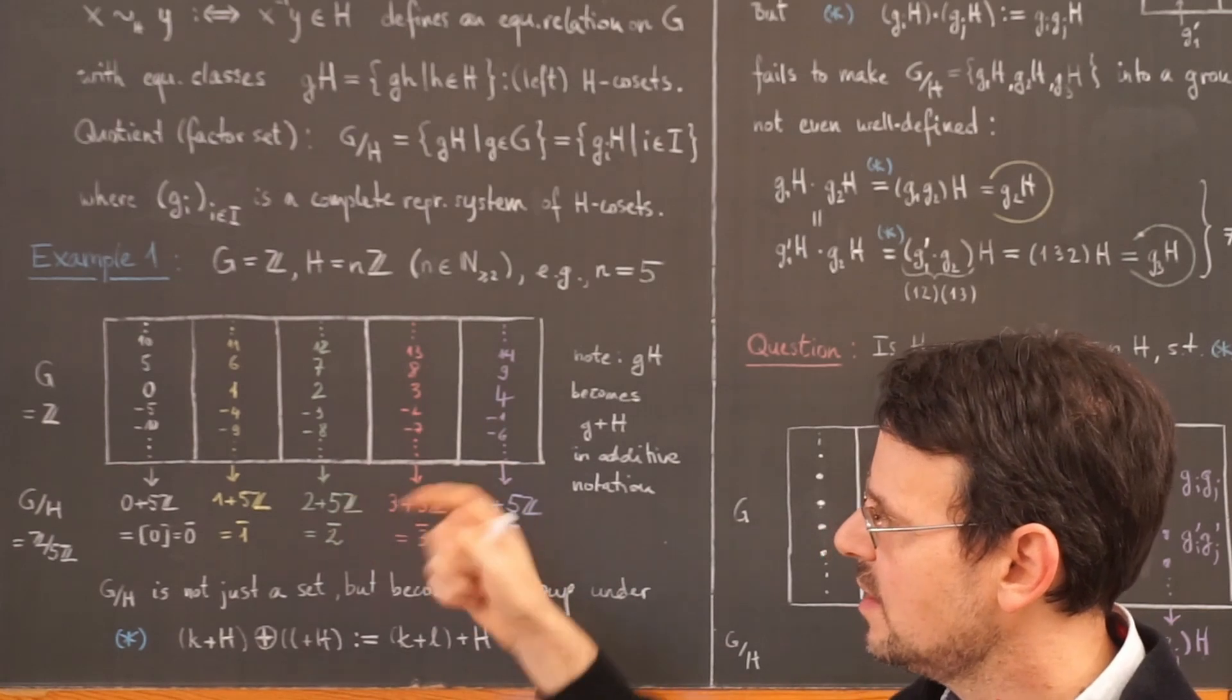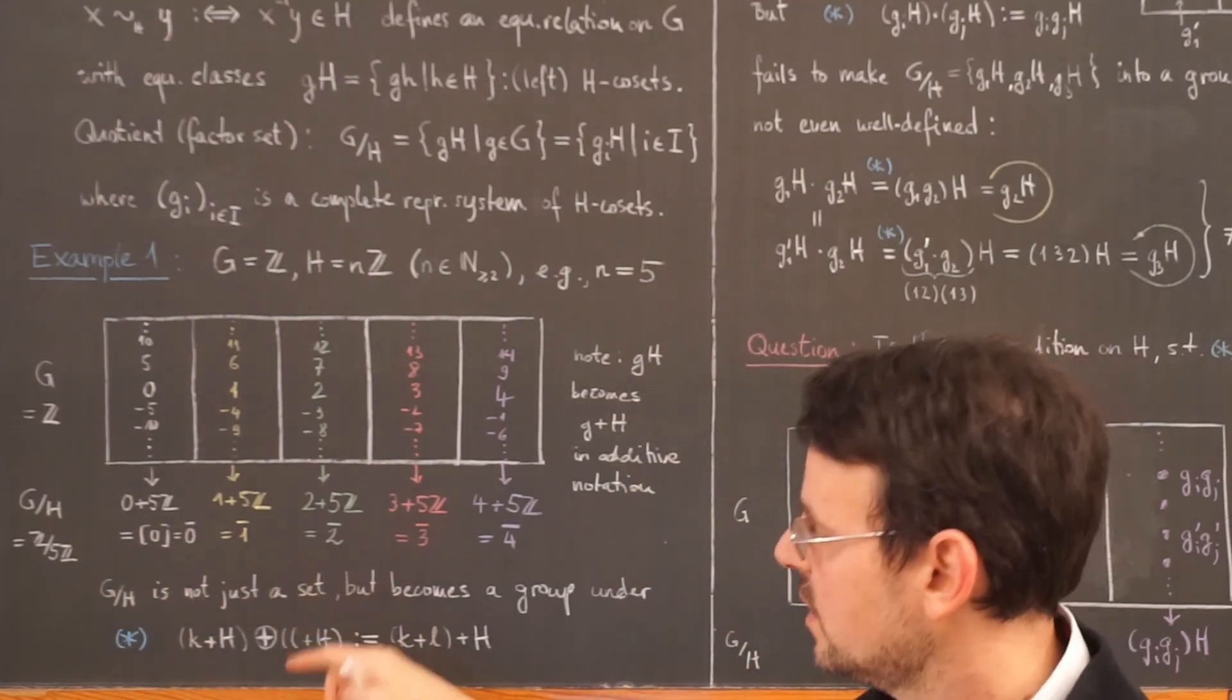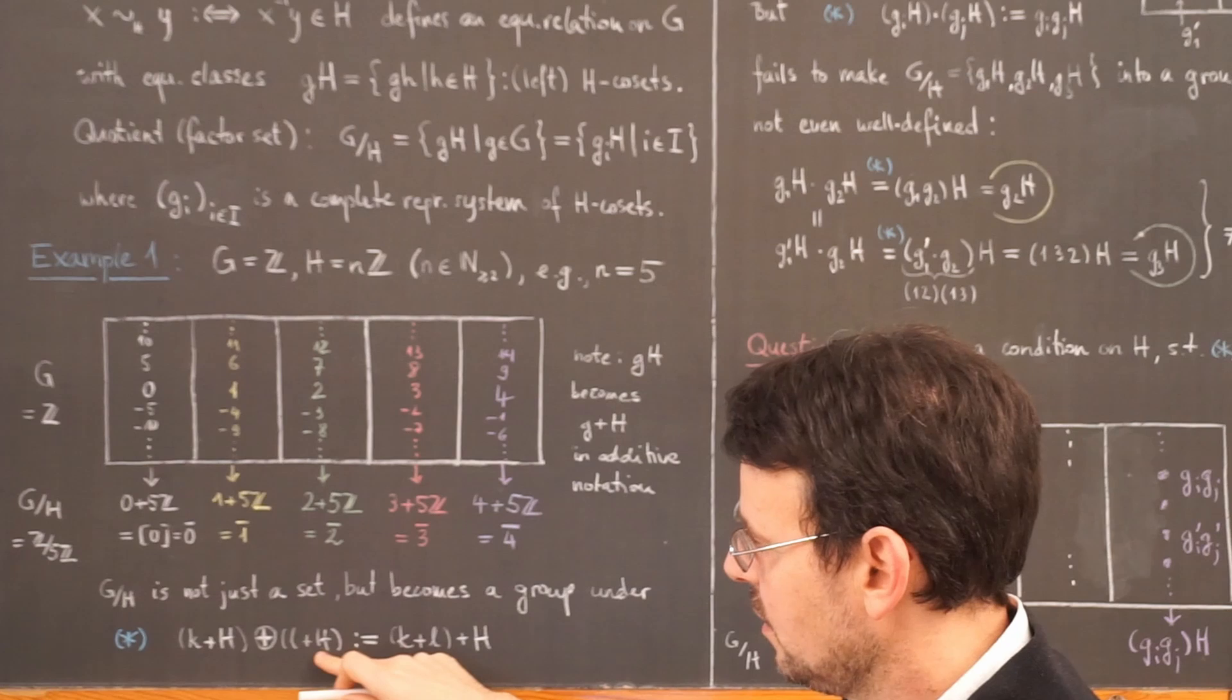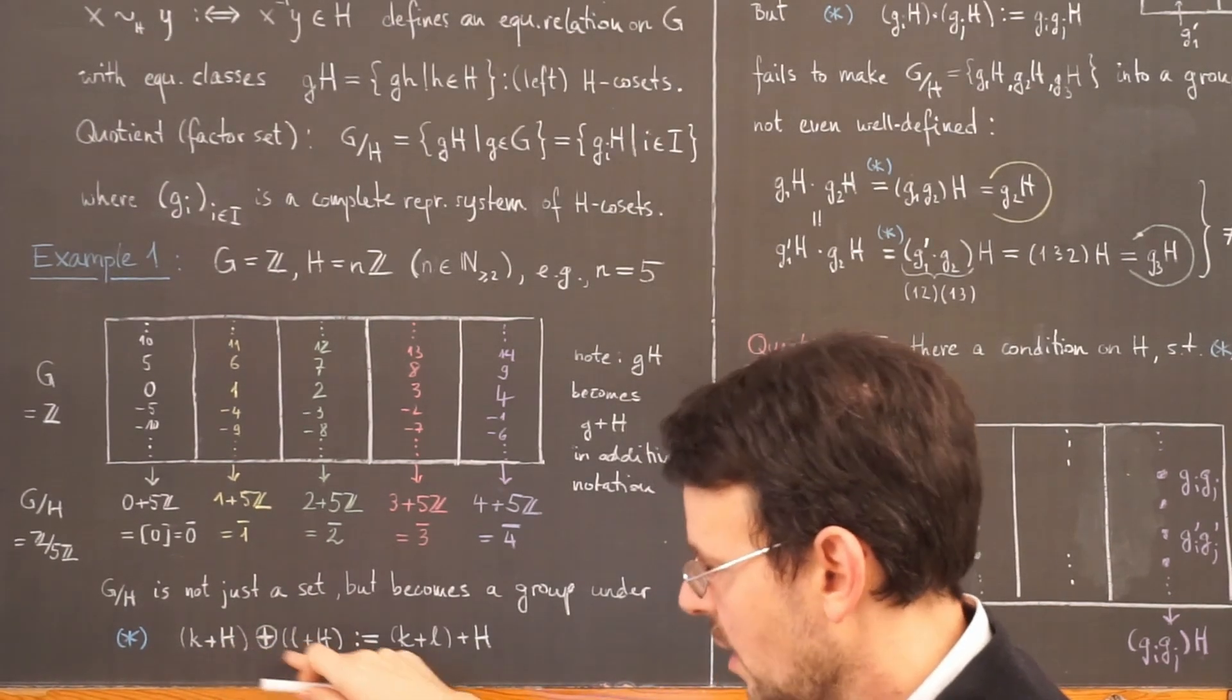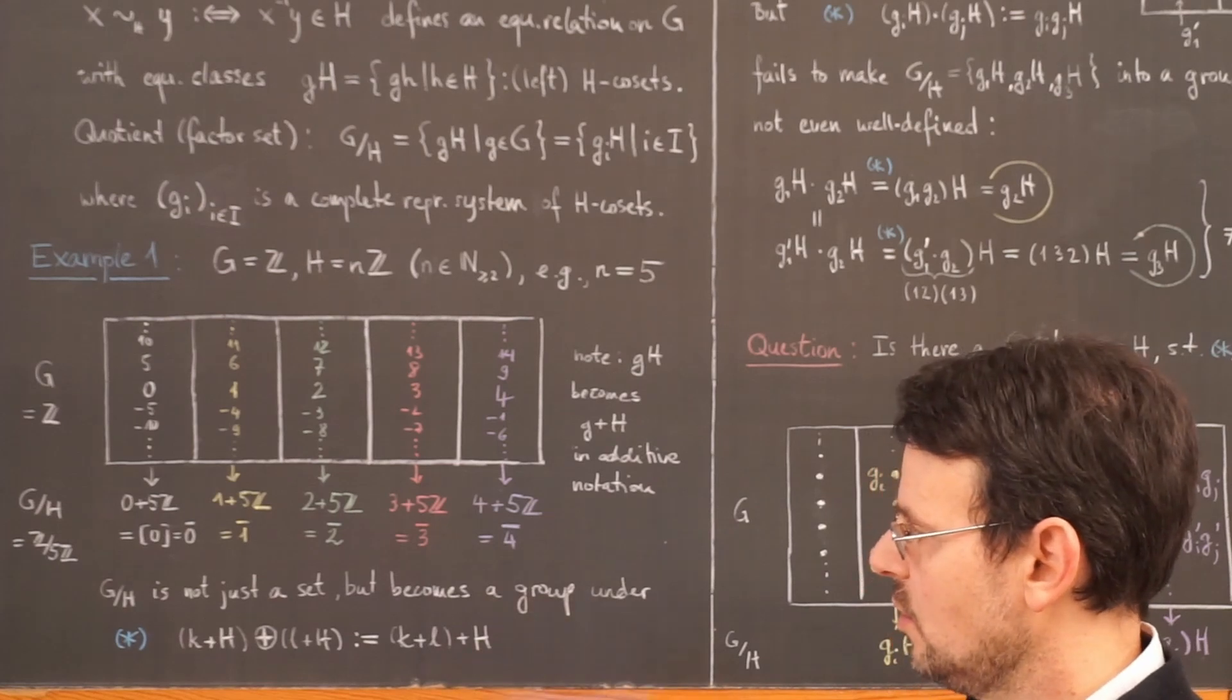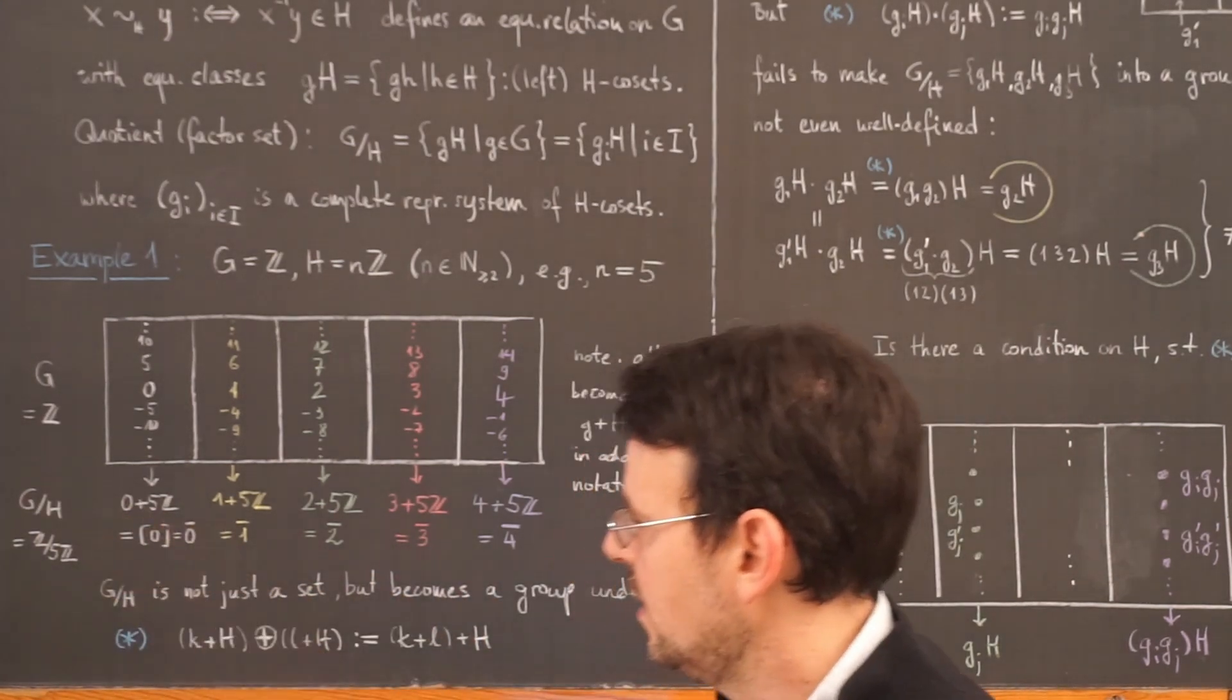Now in this case it is even more than a mere set because we already know that here this can be given the structure of a group simply by doing the following. I take one residue class and add it with another residue class by simply taking the representatives, K and L in this case, adding them and then taking the residue class or left coset with respect to h. And we already showed that this here is well defined and gives us the structure of an abelian group on this set here.